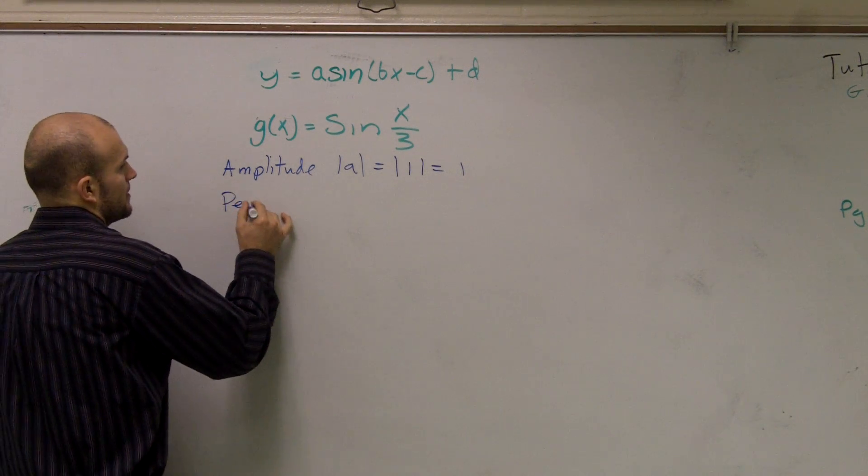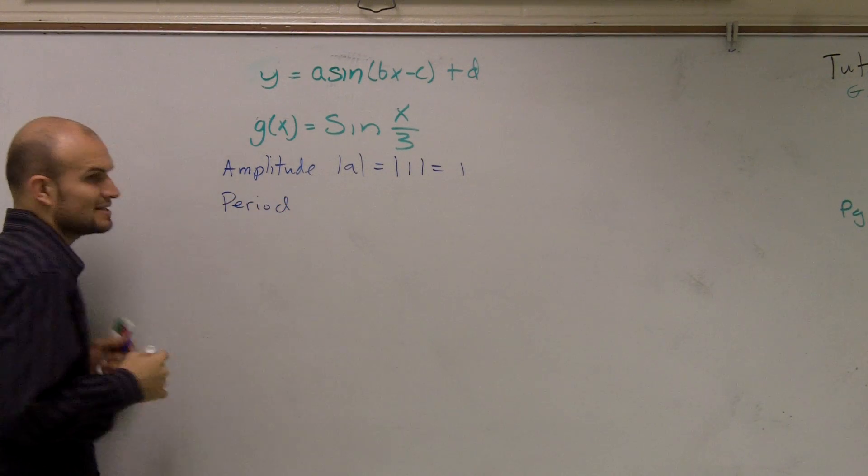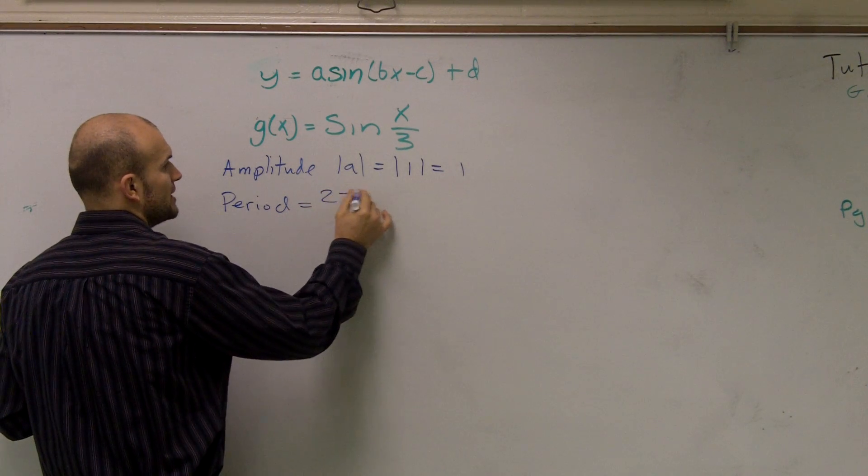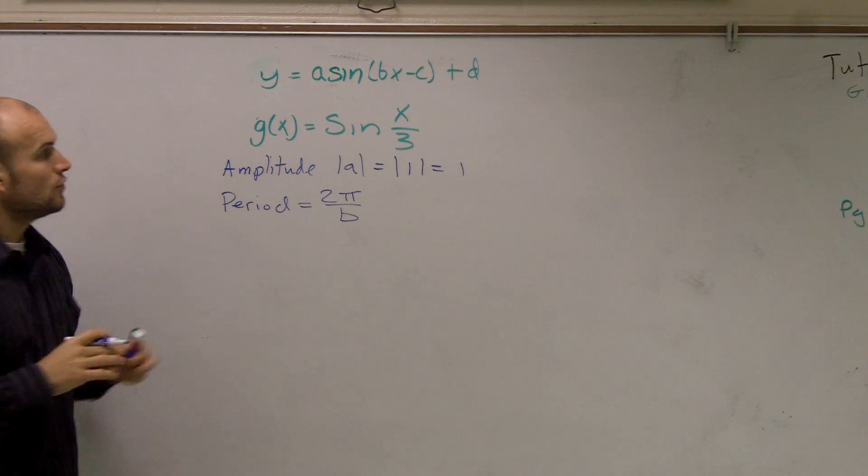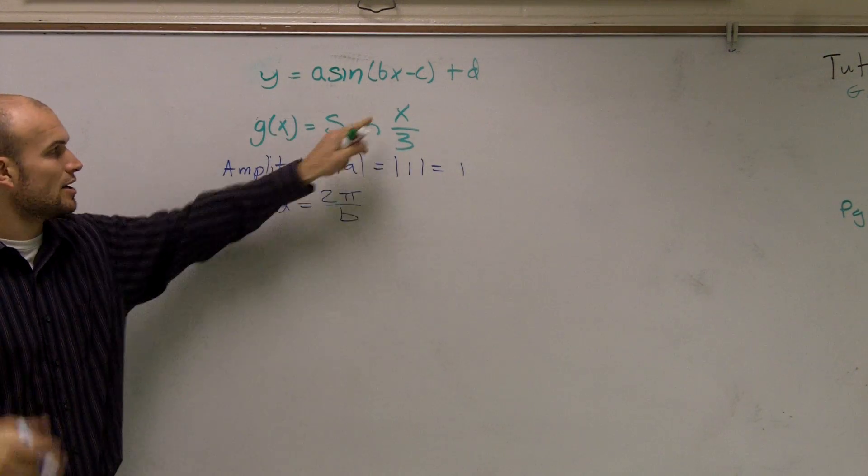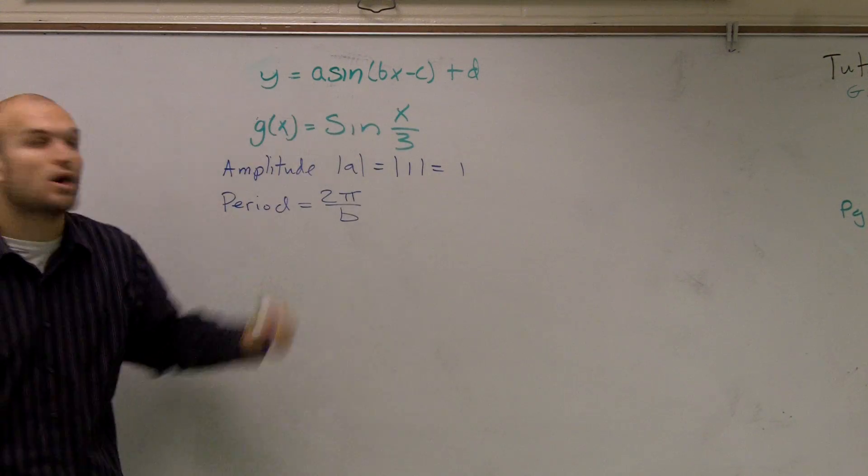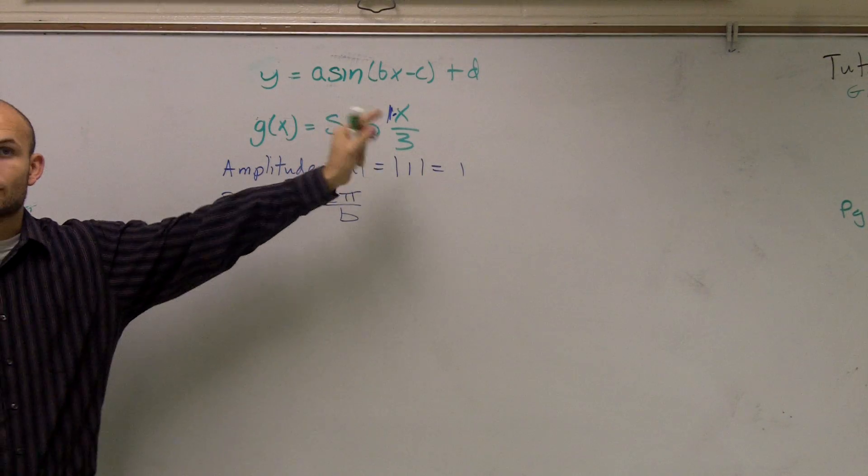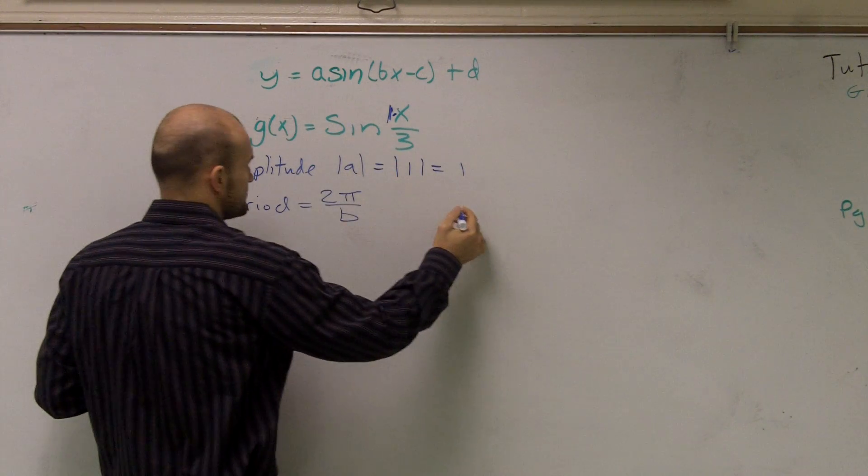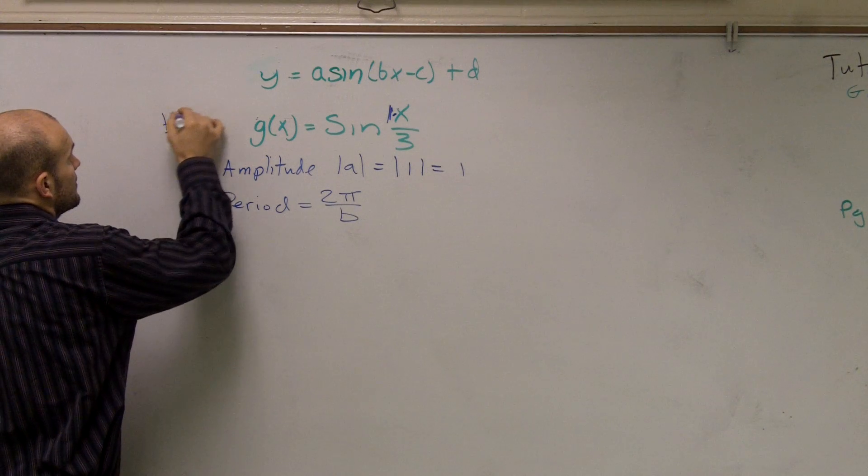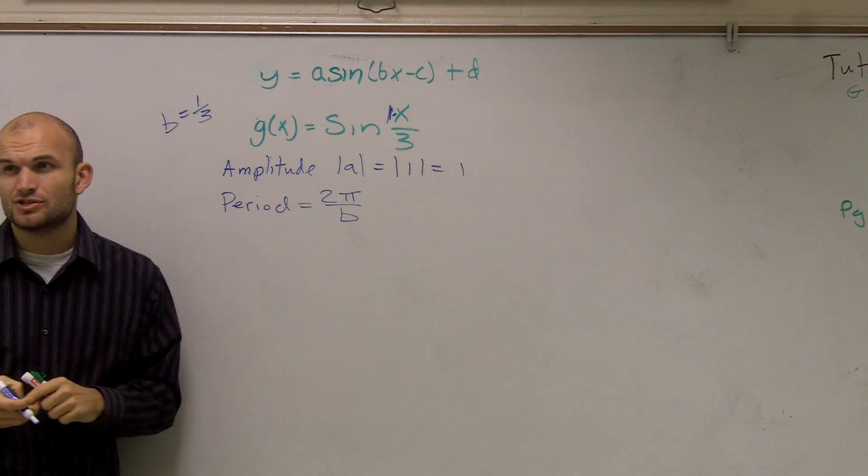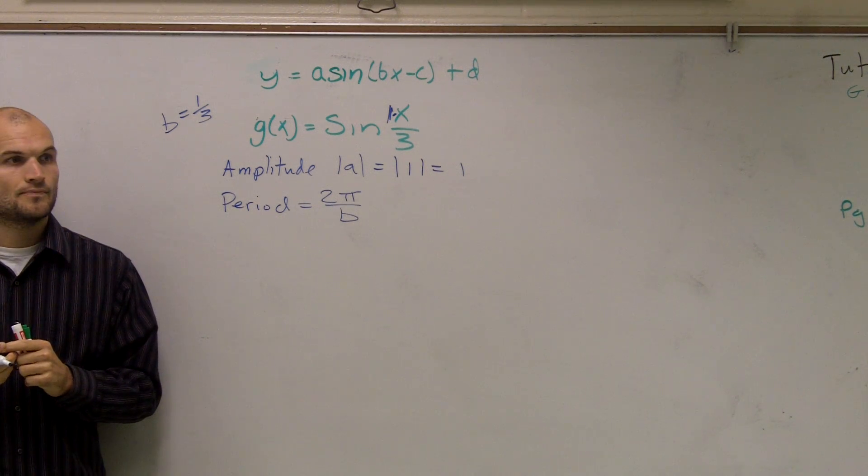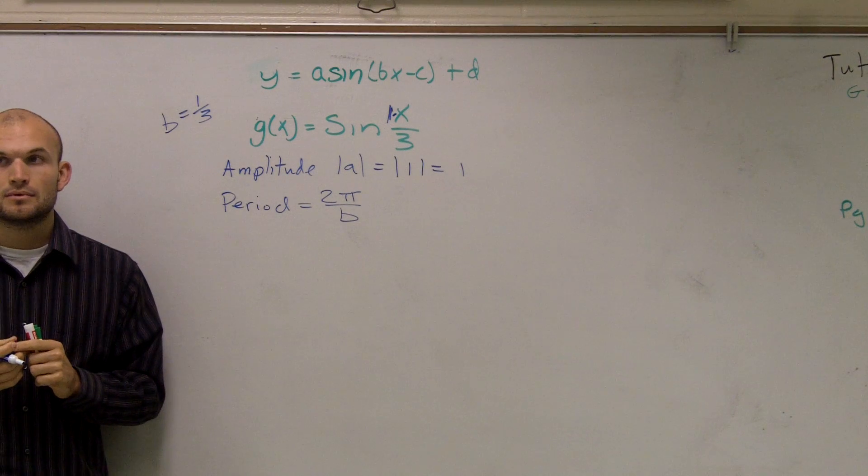Next thing is our period. The period is the length it takes our graph to complete one cycle. So the definition for a period is 2π divided by b, where b is your number in front of x. Now a lot of you might say, oh well, I don't see a number in there, so it's 1. You're correct. But remember that 1 is being divided by 3. So therefore, my b is 1/3. Does anybody have a question why I got 1/3 as my b? It's just x by 3 is the same thing as 1/3 times x.